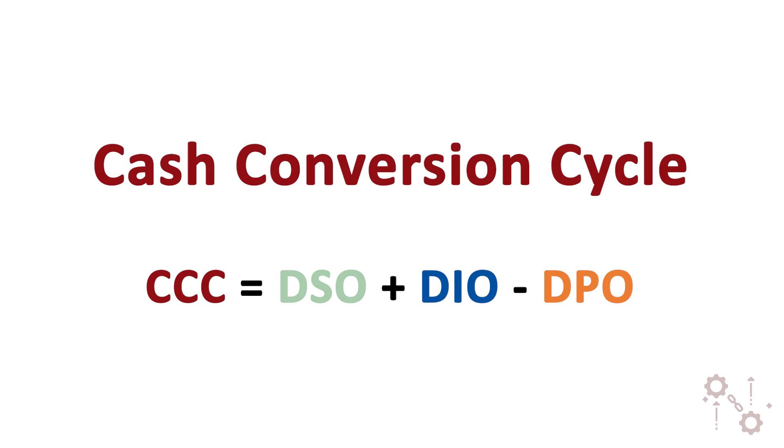Days Sales Outstanding is the first part of the cash conversion cycle formula. A smaller DSO means getting paid quickly for your products or services. A business not offering any credit sales and getting paid immediately for everything in cash, like a typical convenience store, would have a DSO of zero.